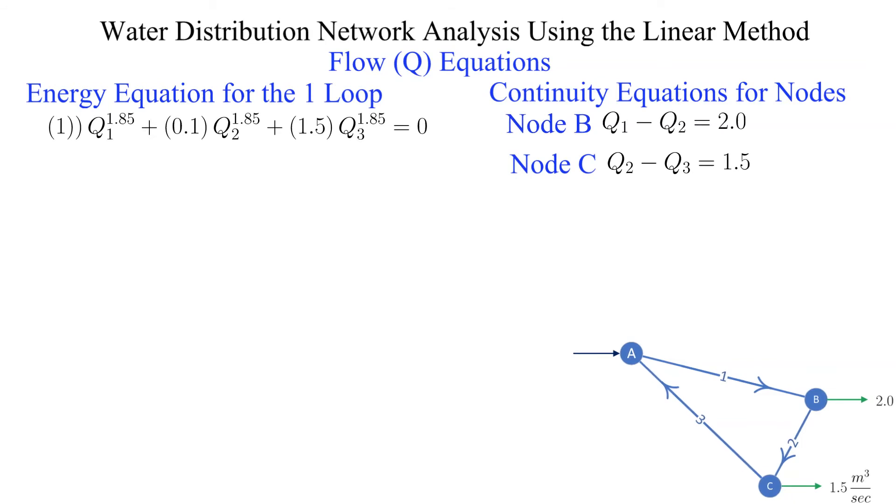The basis for the linear method is to solve the problem with iteration. Each flow that is raised to the 1.85 power in this example is broken down into the product of two flows as indicated. The known result from the previous iteration is raised to the 0.85 power. The unknown flow for the current iteration is raised to the power of 1. It is linear in the unknown.